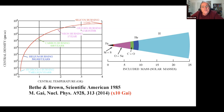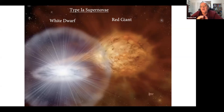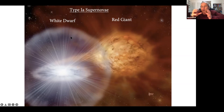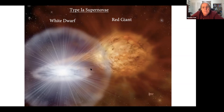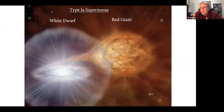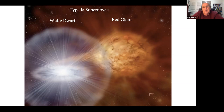Type 1A supernova: a binary system with a white dwarf (the Sun's eventual fate - very condensed, one solar mass) that steals hydrogen from a red giant, building up its mass. Starting from one solar mass, when it reaches the Chandrasekhar limit of 1.4 solar masses, it explodes - this is the type 1A supernova.